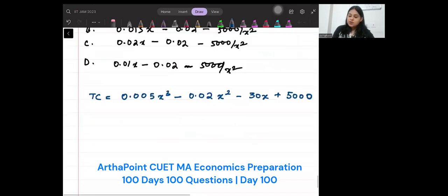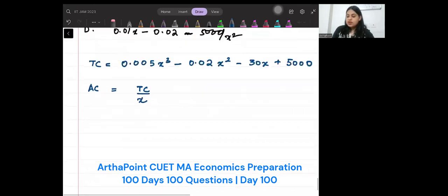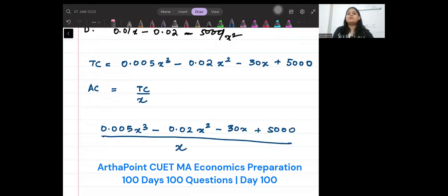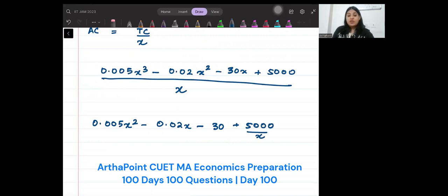So beta, what will be average cost? It will be total cost divided by output. So you will get 0.005x³ - 0.02x² - 30x + 5000 divided by x. This will be 0.005x² - 0.02x - 30 + 5000/x. This is your average cost.